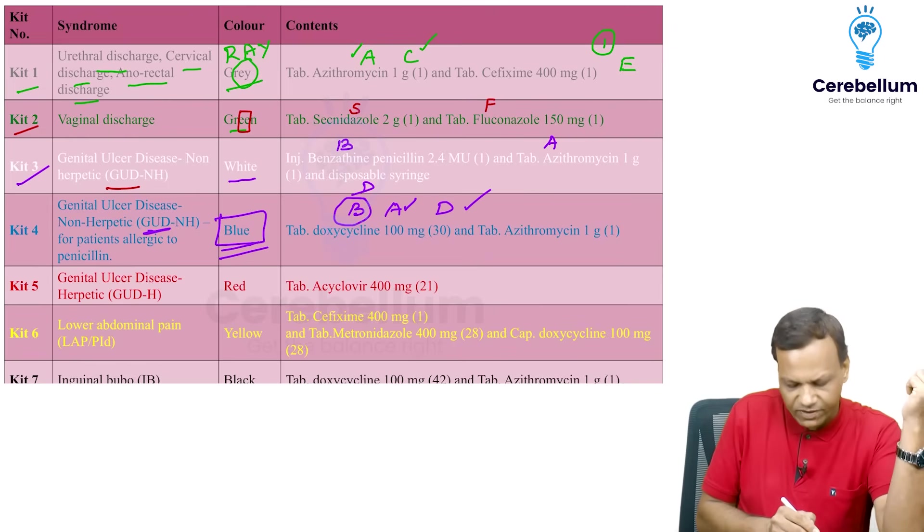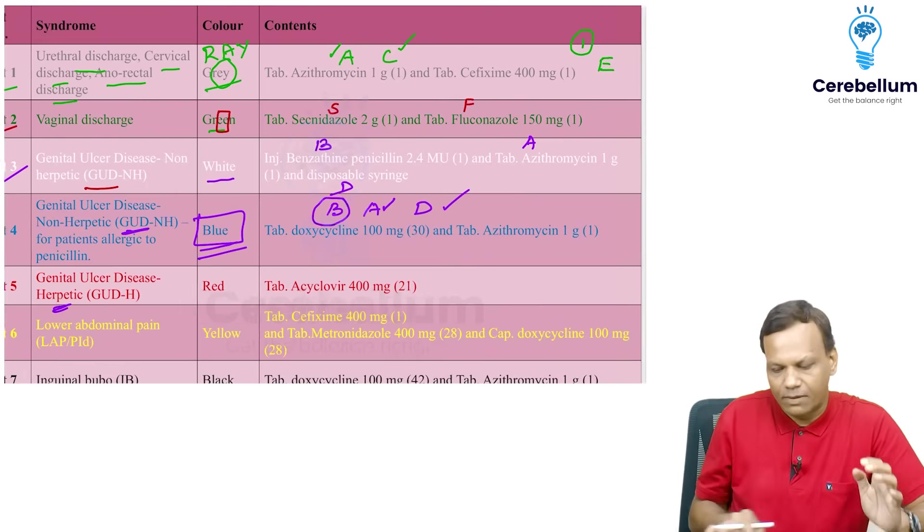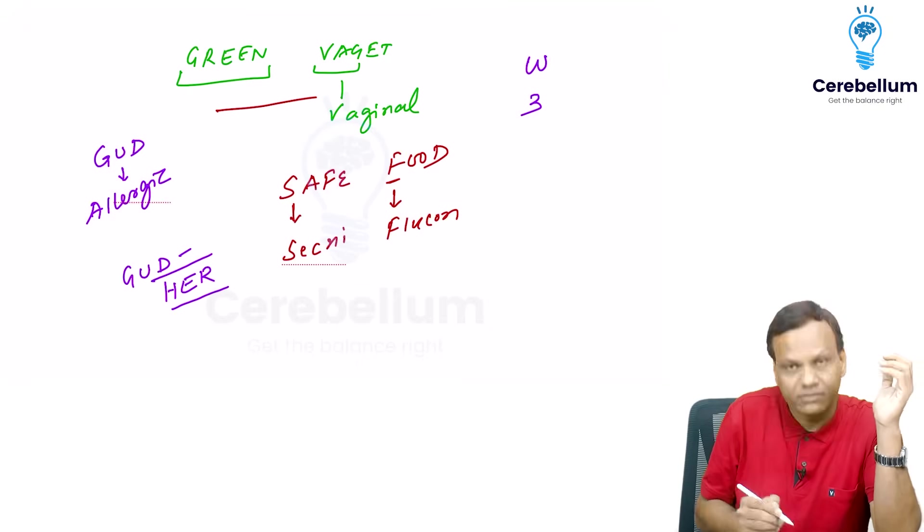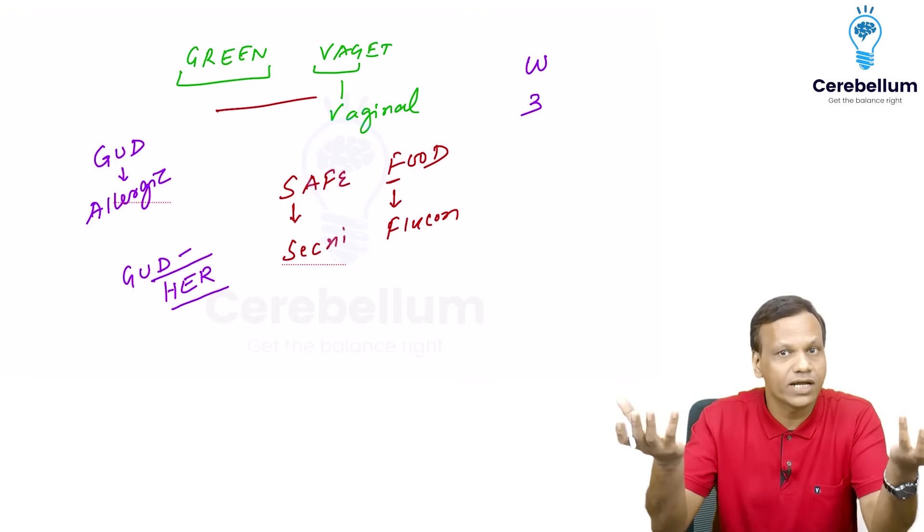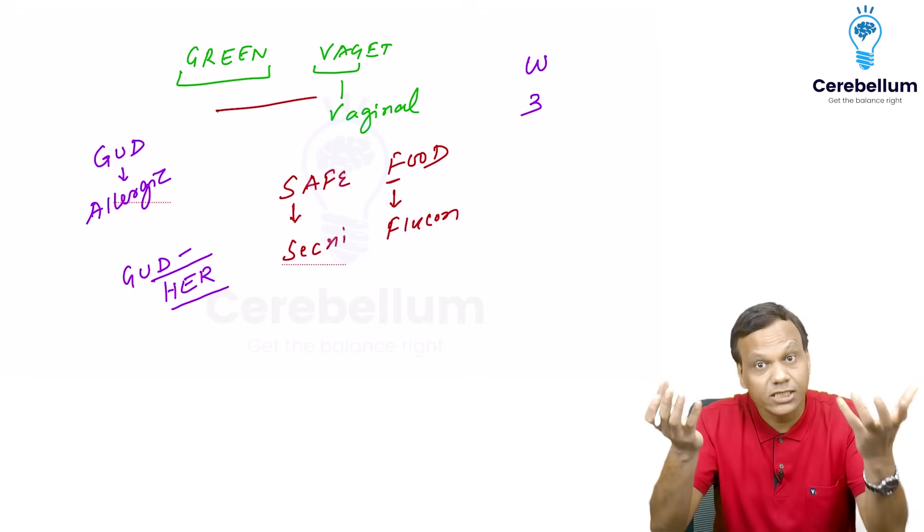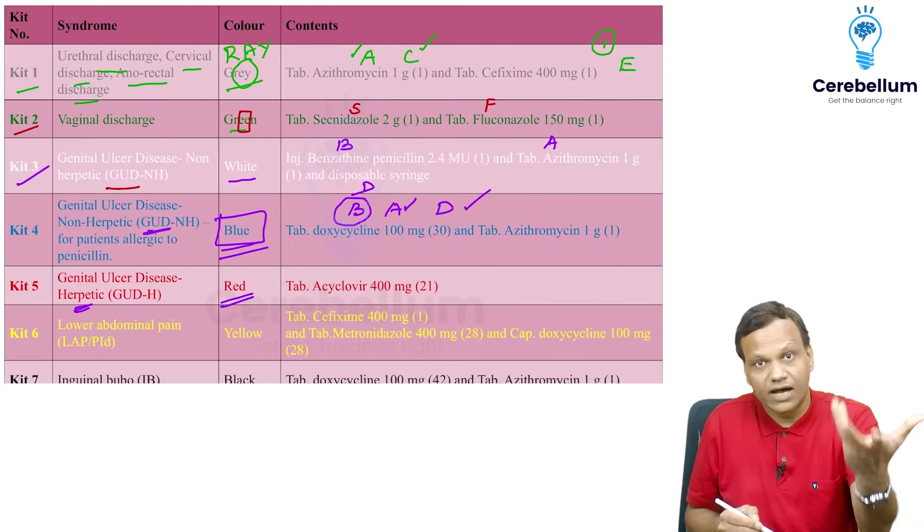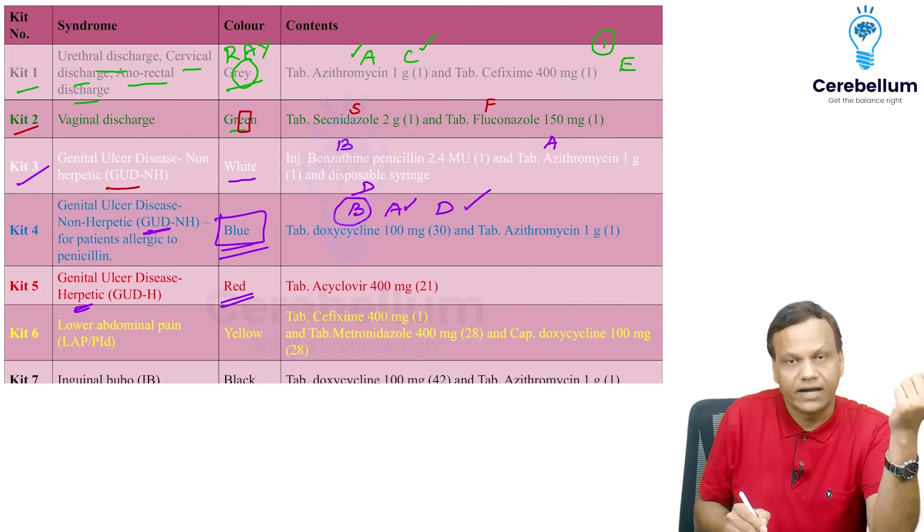Then kit 5. Kit 5 is for genital ulcer disease which is herpetic. So you can remember genital ulcer disease which is herpetic. So when the word comes her. Her means she and we know she, she is always angry, always has red face. So it is red. So it is red because her. When we talk about her, she will appear red. Red is her.